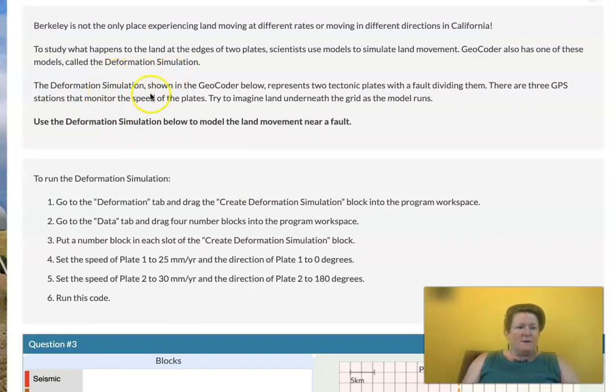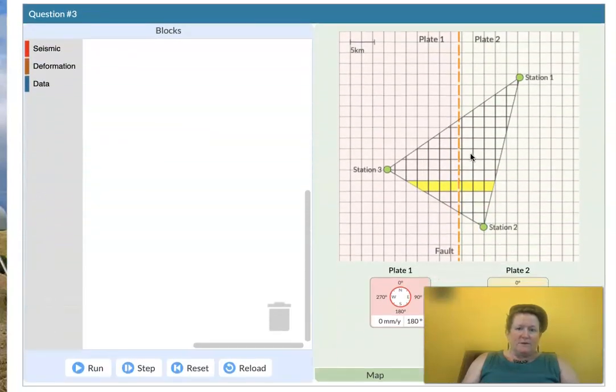The deformation simulation shown in the Geocoder below represents how two tectonic plates with a fault dividing them. There are three GPS stations that monitor the speed of the plates. So we can see those three GPS stations right here they make a triangle.